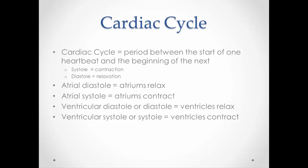The cardiac cycle is a period between the start of one heartbeat and the next, giving us an idea of how we're moving blood through the heart. Two components of that are systole and diastole. Systole refers to contraction, and diastole refers to relaxation. So we can end up with four conditions, depending on whether it's the atriums or the ventricles that are contracting or relaxing.